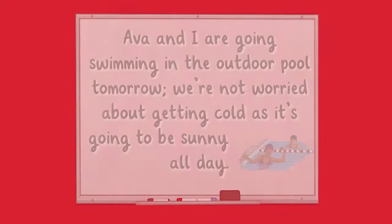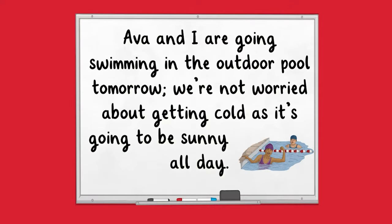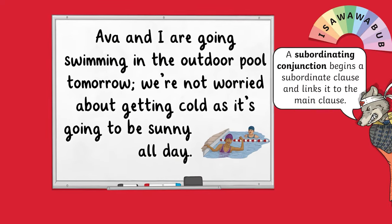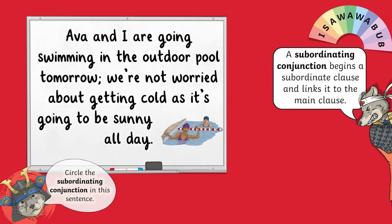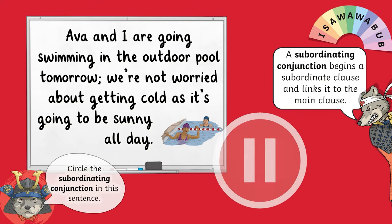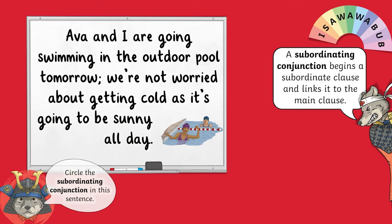And what about this sentence? Here you are being asked to circle the subordinating conjunction. 'Ava and I are going swimming in the outdoor pool tomorrow. We're not worried about getting cold as it's going to be sunny all day.' Remember to use 'I SAW A WABUB' to remind yourself of the most common subordinating conjunctions. That's right — the subordinating conjunction is 'as'.